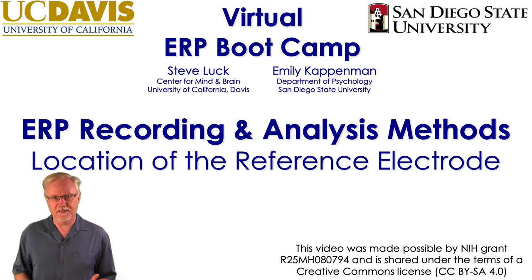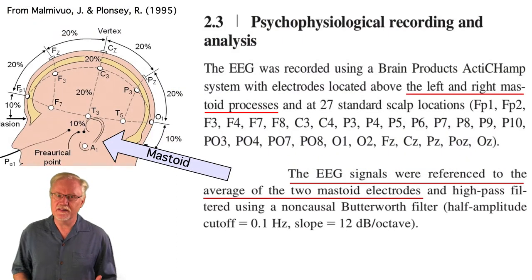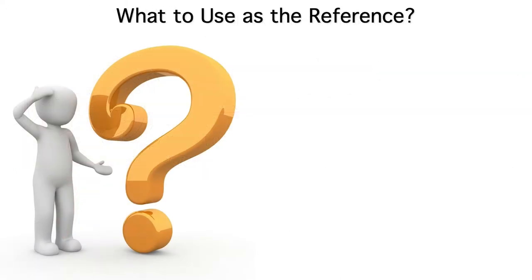Now that I've explained what a reference electrode is, we can see why Felix's study included electrodes over the mastoid processes. They were the reference electrodes. He put one on each side and used the average of the two as the reference.